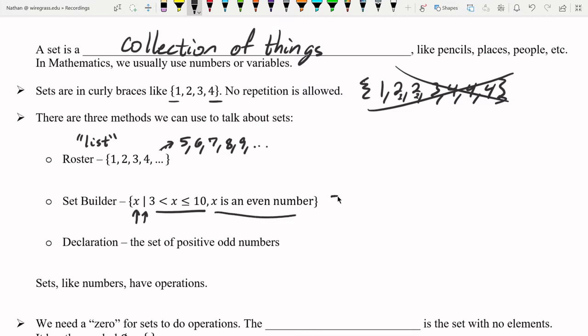That means I can rewrite this set using the roster method by just listing out the elements. The first even number in this range is 4. Then 6. Then 8. And x can equal 10. And that's it.